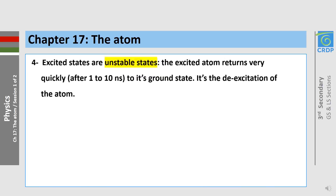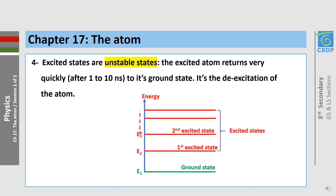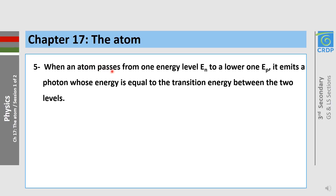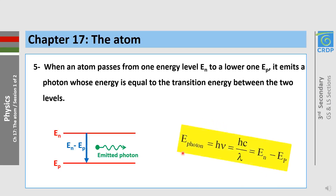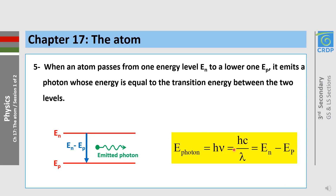When an atom passes from one energy level En to a lower one Ep, it emits a photon whose energy is equal to the transition energy between the two levels. The energy of the photon equals h·ν = hc/λ = En minus Ep.